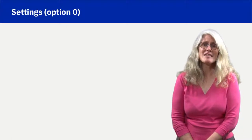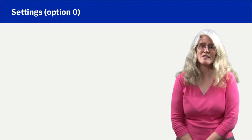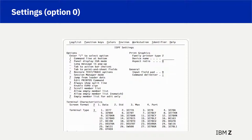ISPF option 0 is the settings panel applied to all panels in ISPF. To highlight a few settings: observe number 1 — remove the slash to place the command line at the bottom of the panels; the benefit of the command line at the top is making use of workstation copy and paste functions. Observe number 2 — the command delimiter permits stacking of commands to be executed upon the next Enter key. Observe number 3 — the drop-down permits default ISPF colors to be changed. While the TN3270 emulator can change colors, the same is true for ISPF.